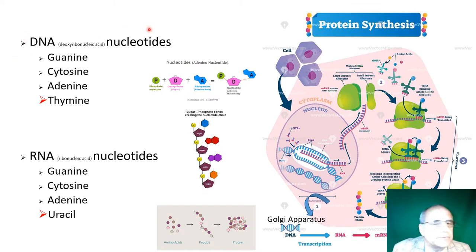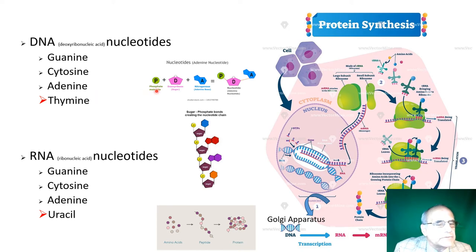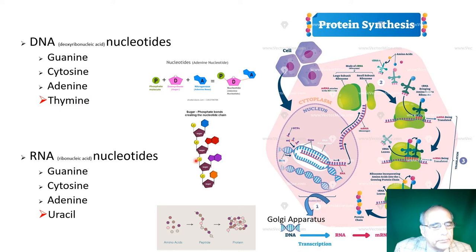A quick review of protein synthesis: DNA consists of nucleotides — deoxyribose, guanine, cytosine, adenine, thymine. RNA — ribonucleic acid — consists of guanine, cytosine, adenine, but uracil instead of thymine. Nucleotides generically have a phosphate, a ribose 5-carbon sugar, and a nitrogenous base. They combine and the nitrogenous bases are linked together from phosphate-to-sugar phosphate-to-sugar bonds. Our target is to assemble amino acids into a peptide chain and ultimately a complex protein. The code is in the genes.